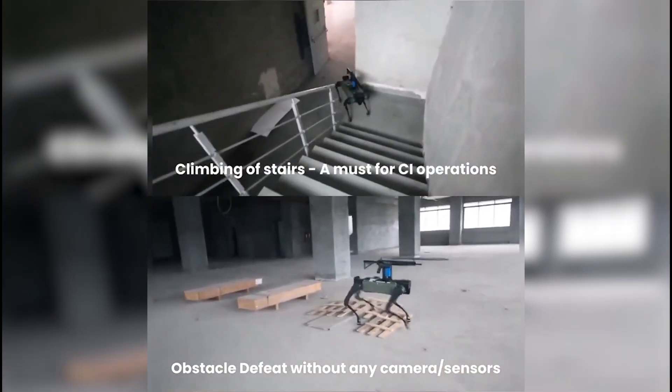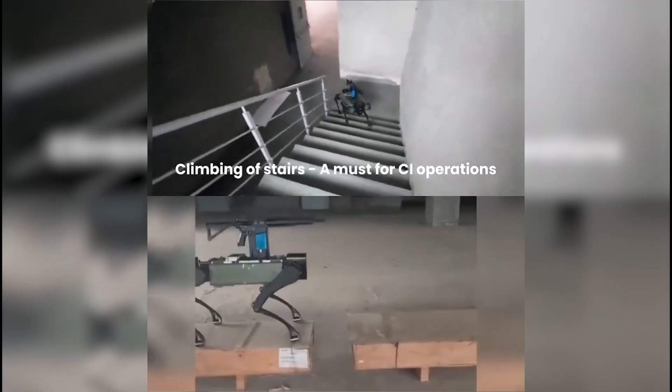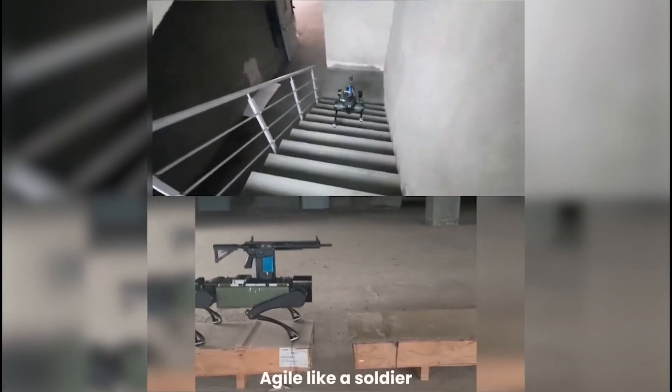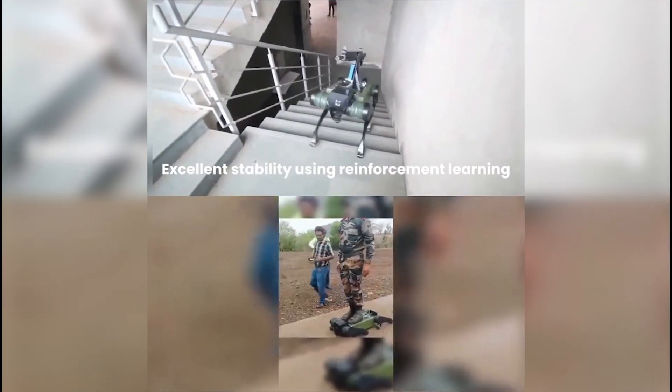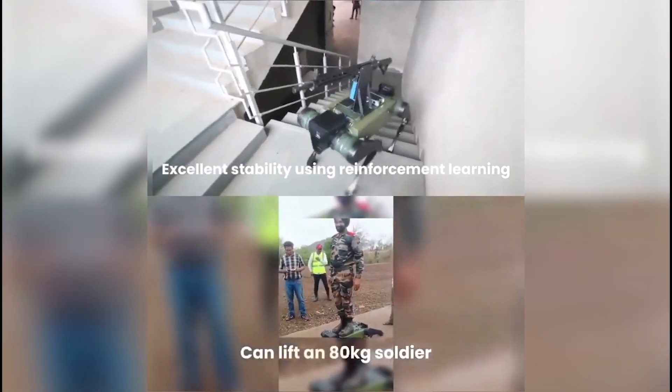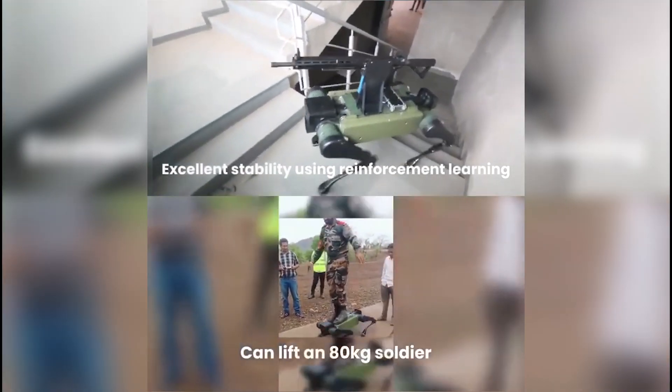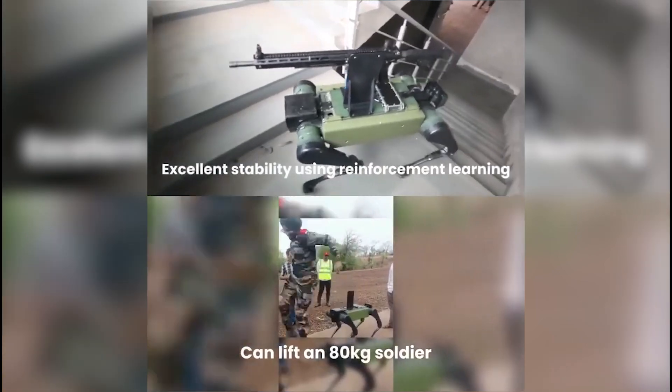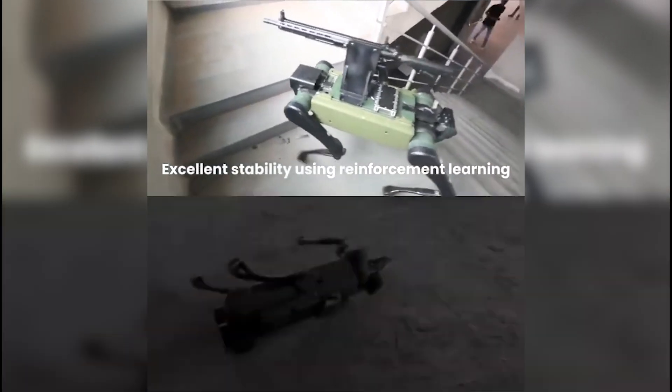Equipped with LiDAR technology and advanced AI, Prahasta can navigate difficult terrain, climb stairs, and even carry a fully grown adult. Its auto-resurrection capability allows it to right itself if knocked over, ensuring continued operation in challenging environments.